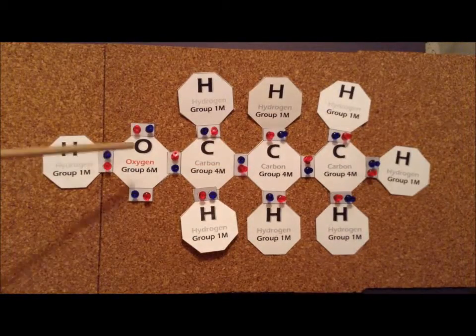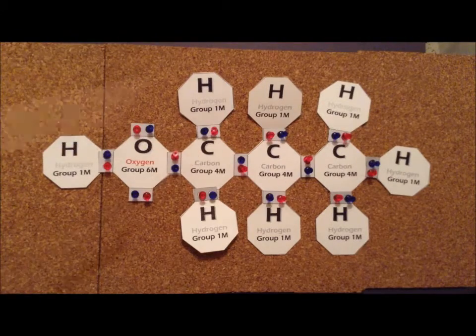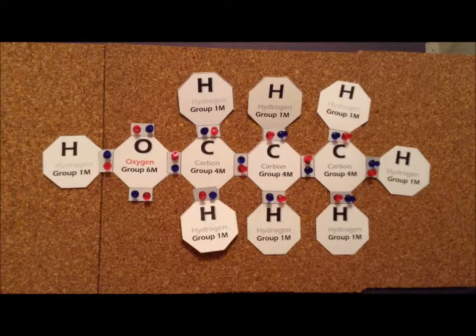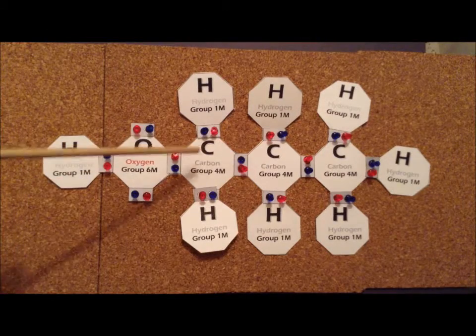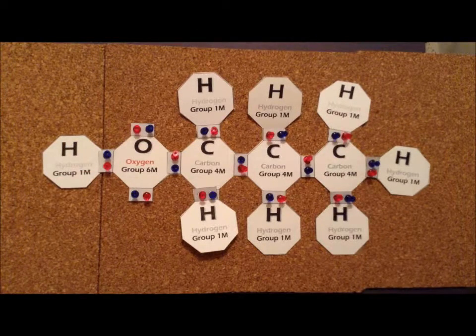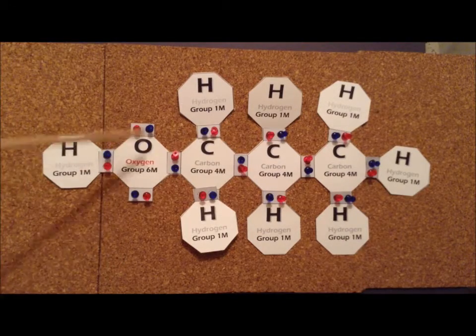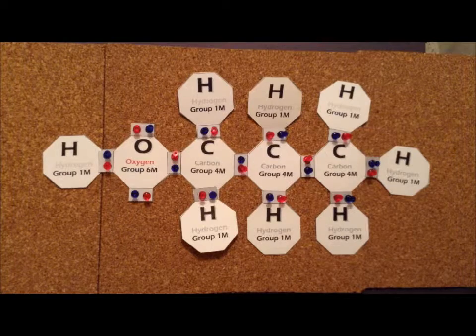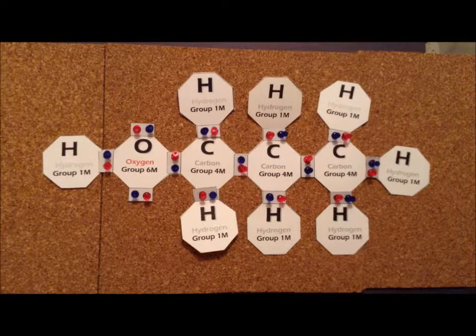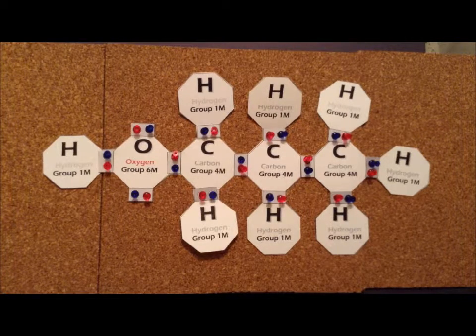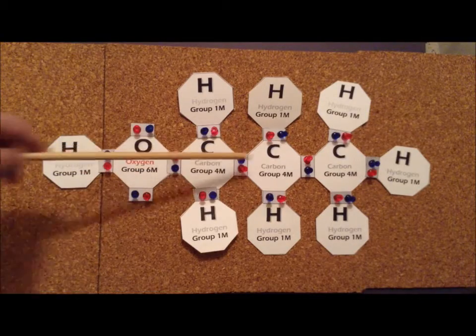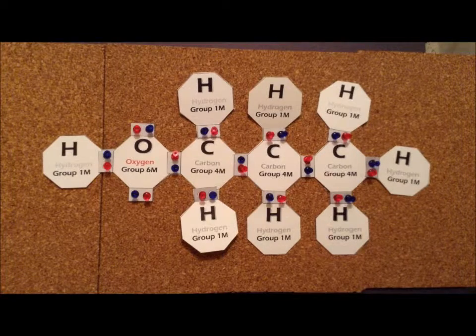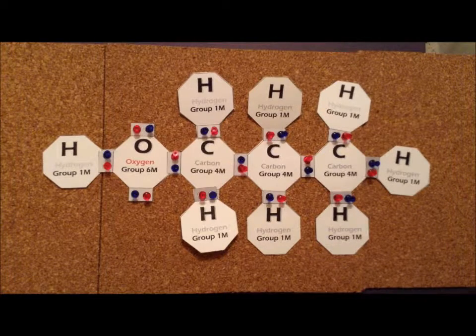If we attach the OH group to one of the end carbons, we end up with a distinct chemical compound. So in this case, we would call this compound 1-propanol, 1 because the alcohol group is attached directly to the first carbon. It is also sometimes called n-propanol. Again, the n is for normal, and it's normal because we have a straight chain and we're attaching the substituent to the end. So this is n-propanol or 1-propanol.